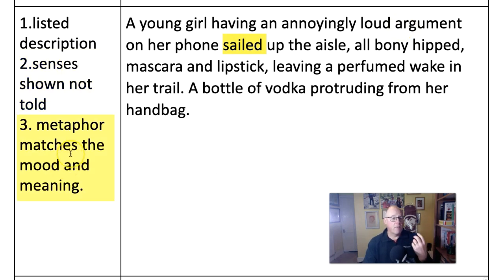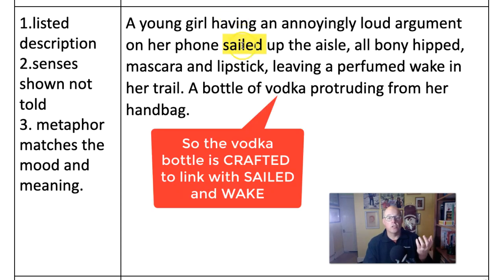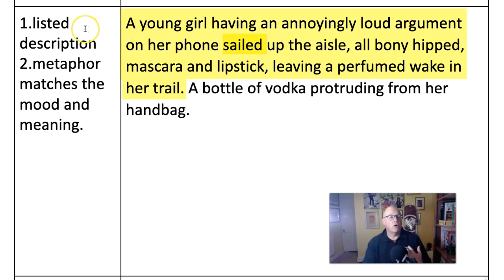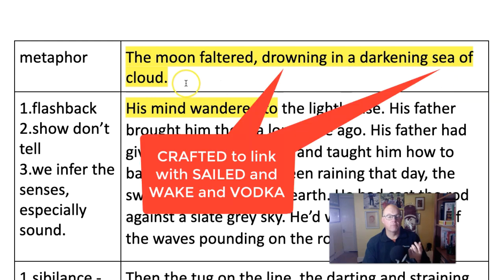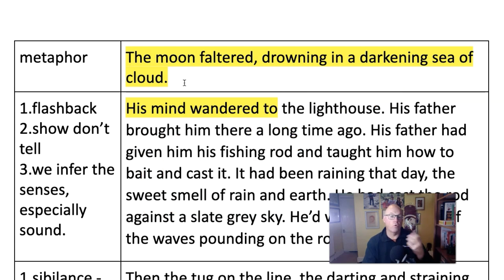Does the metaphor match the mood? Yes, because she's probably drunk - hence the bottle of vodka - she's going to be unsteady on her feet, just like you feel when you're at sea standing on the deck of a ship, which works with 'sailing' and 'the wake.' And we've also got another brilliant listed description. So now I've changed the description of the moon to fit with that earlier description: 'The moon faltered, drowning in a darkening sea of cloud.' That fits the imagery we've just had about the girl who's like a drunken sailor. Now we get the idea of the moon also being affected by the sea - in this case, a sea of clouds. It's a new metaphor that fits with the old one. All of it joins together.